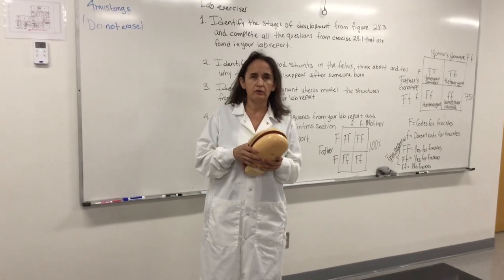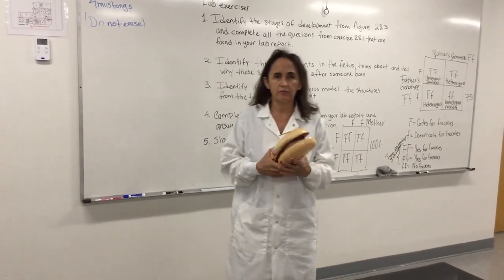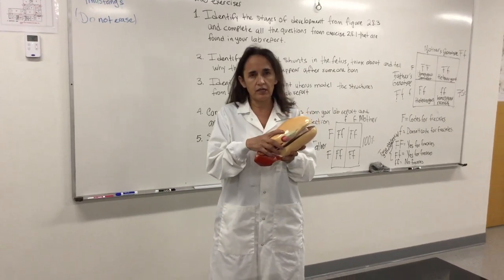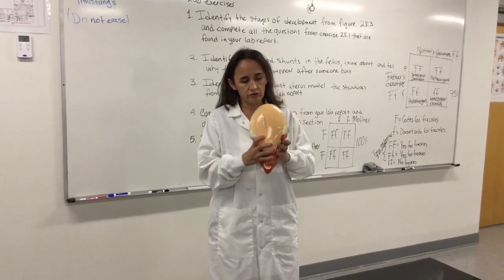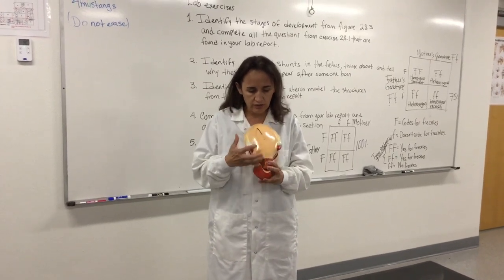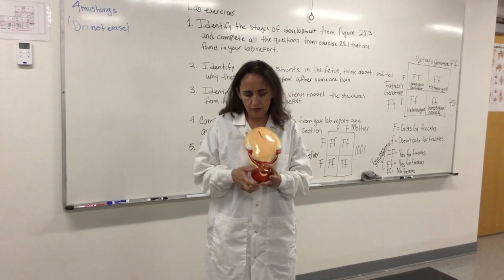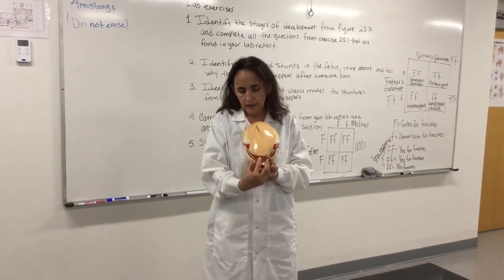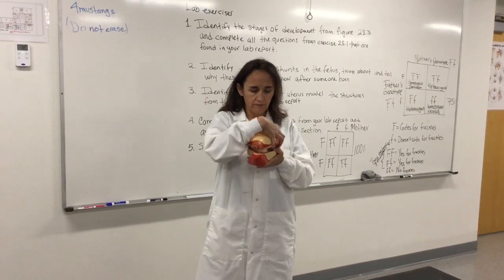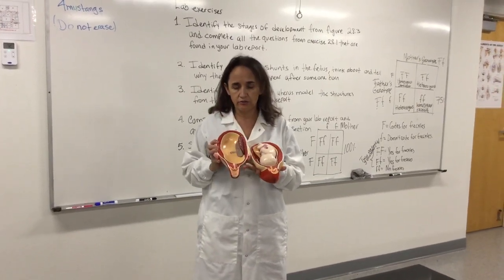In this video we're going to see the structures of a pregnant uterus. There are several changes that happen in the pregnant uterus. This is the model of the pregnant uterus — this is the uterus itself, these are the ovaries, this is the fallopian tubes, and this represents the vagina. So this is the external view. If I open it, you can see the internal view.